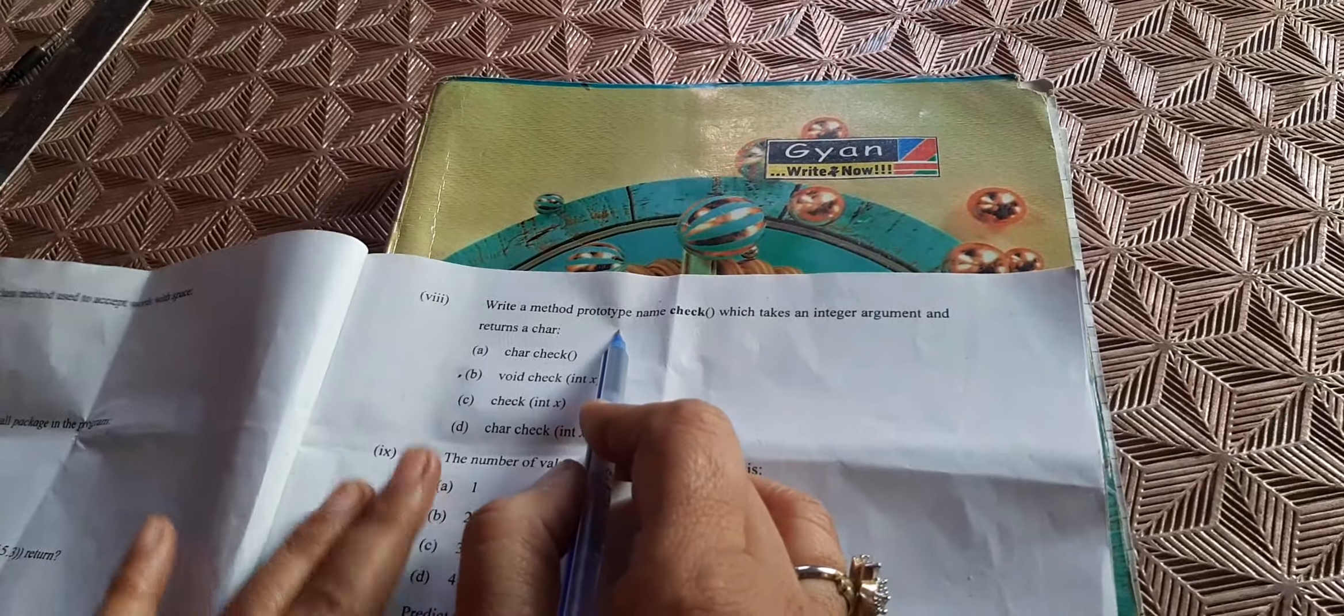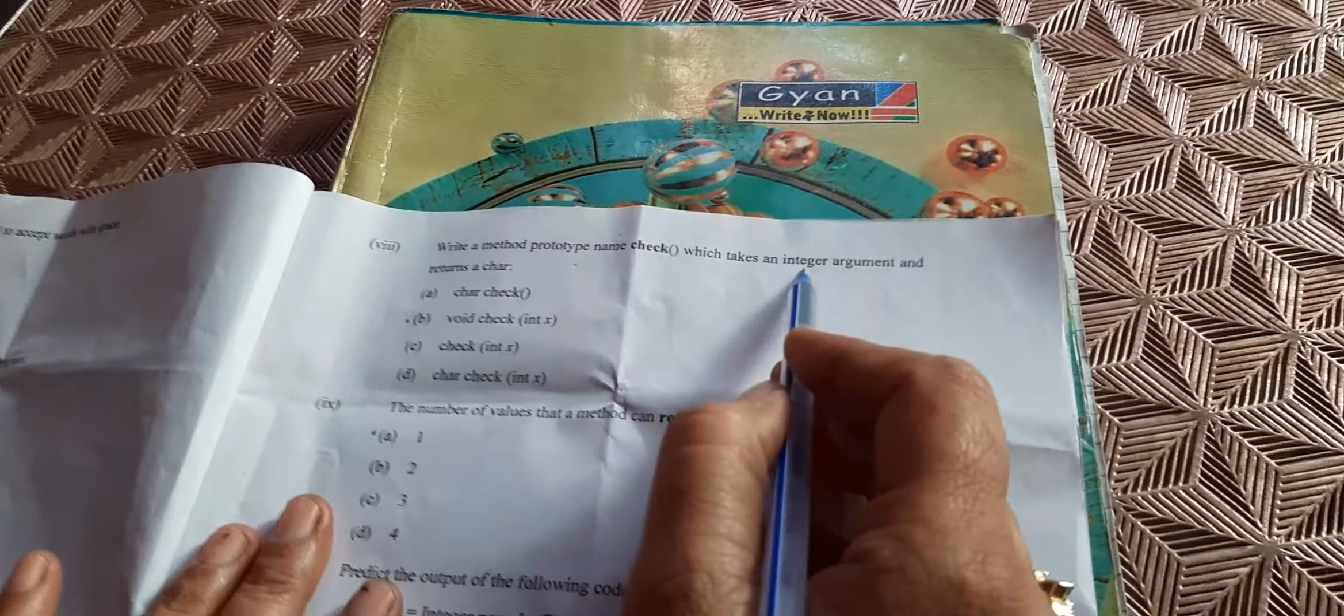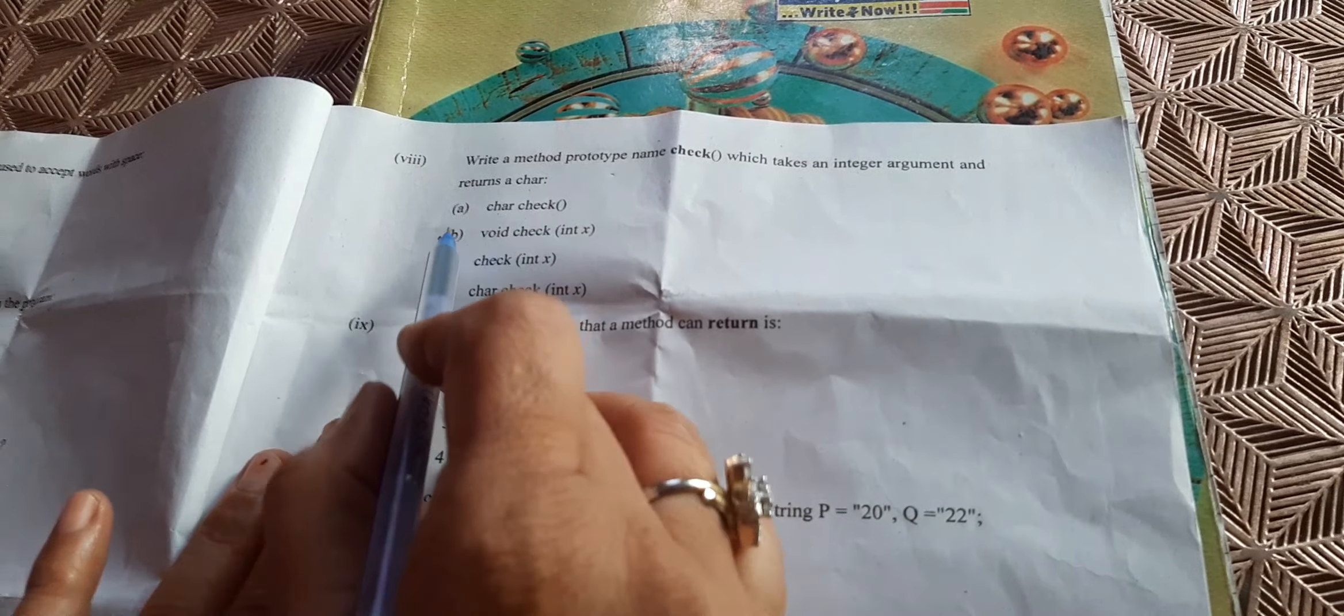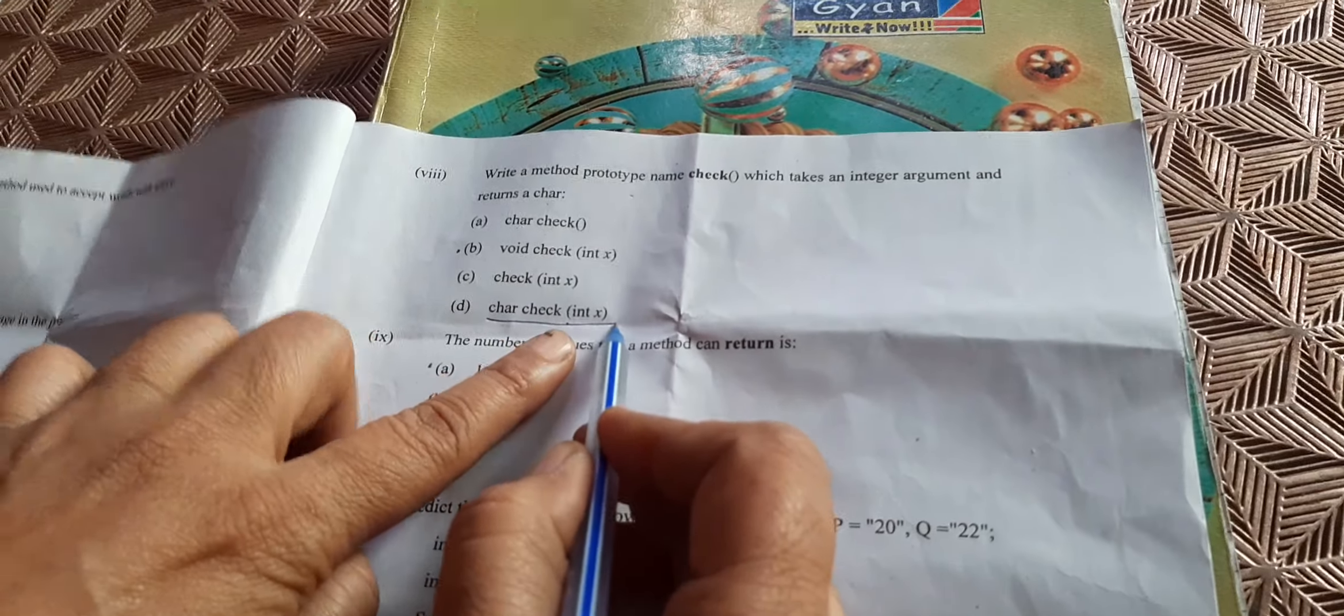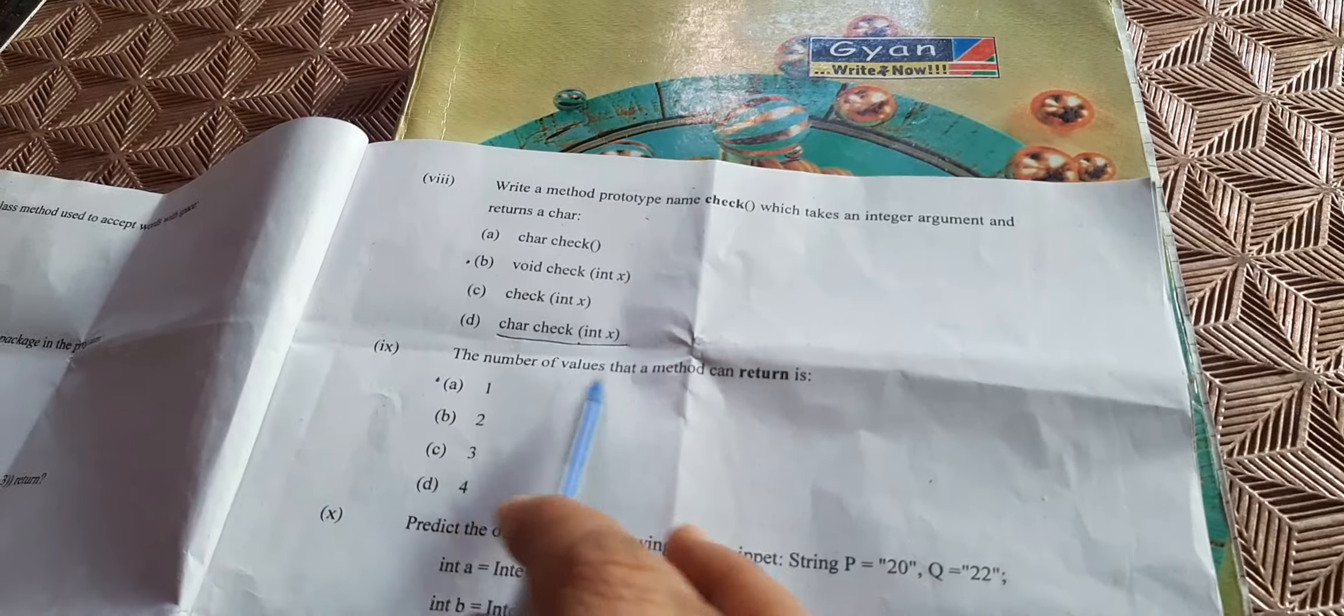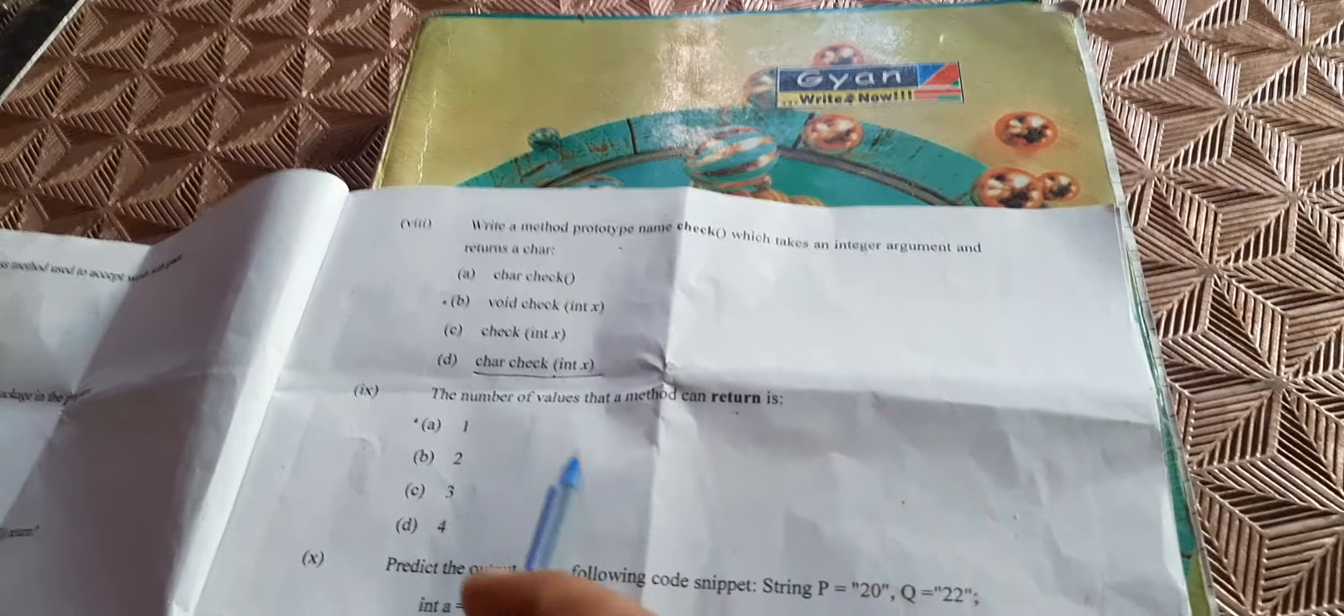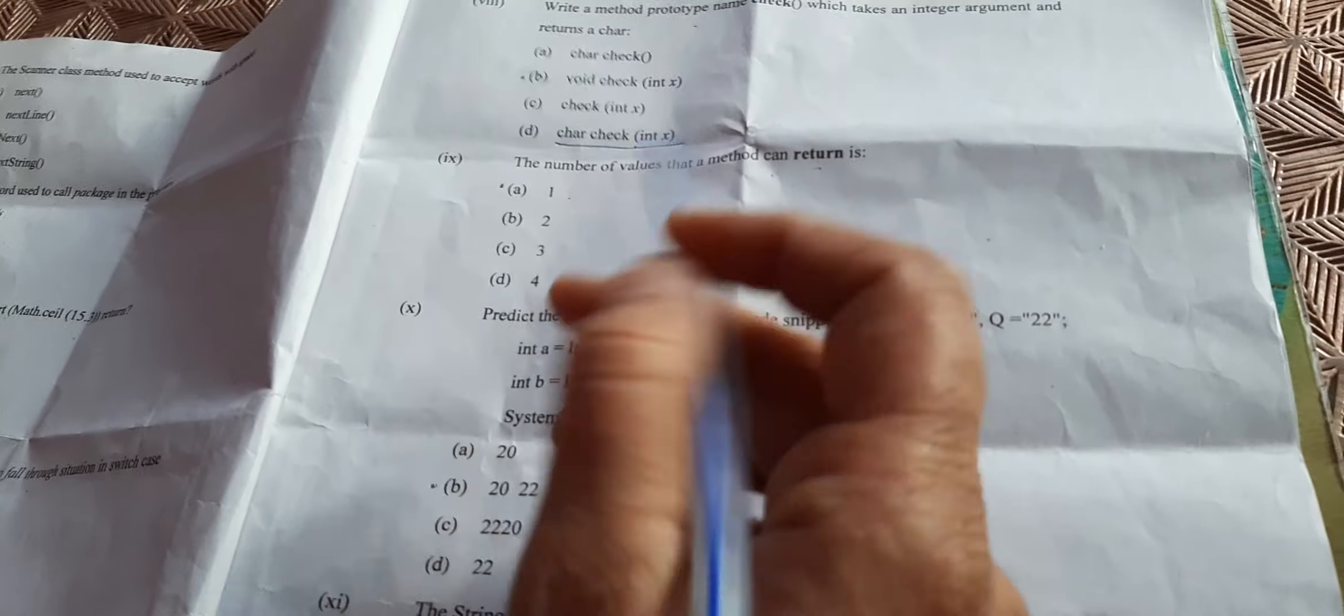What is a prototype? They have given the name of the function - it will take integer and return character type of value. The correct answer will be character check(int x). The number of values a method can return: there can be as many return statements, but how many values can return statement return? That is one, not more than one.